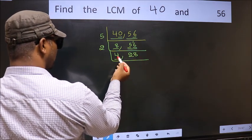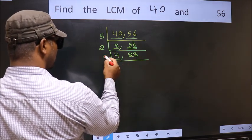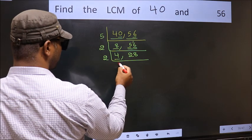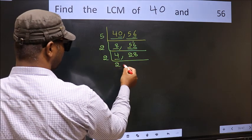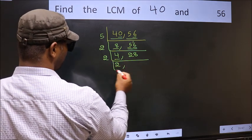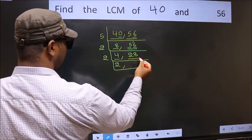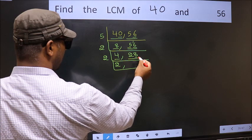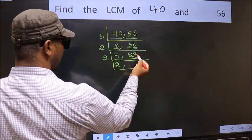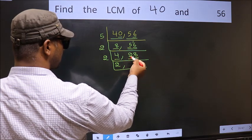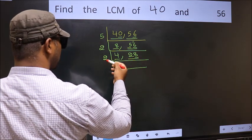Now here we have 4. 4 is 2 twos — 4. The other number is 28. The last digit is 8, which is even, so this is divisible by 2.